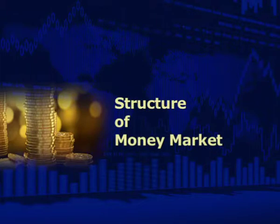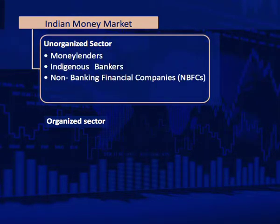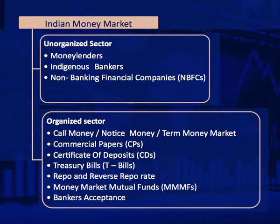The Indian money market is divided into organized and unorganized segments. The unorganized market is an old indigenous market mainly made up of indigenous bankers, money lenders, NBFCs, etc. The organized sector includes call money, notice money, term money market, commercial papers, certificate of deposits, treasury bills, repo and reverse repo rates, money market mutual funds, and bankers' acceptance. The organized market is that part which comes under the regulatory purview of RBI. The nature of money market transactions is large in amount and high in volume, thus the market is dominated by a small number of large players.